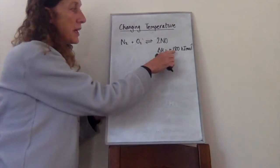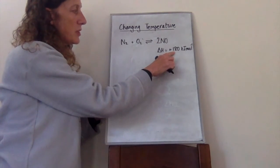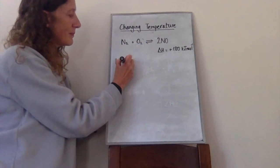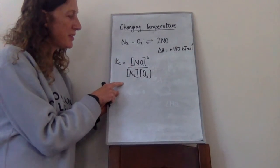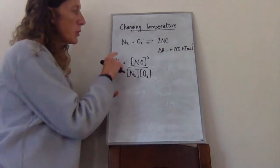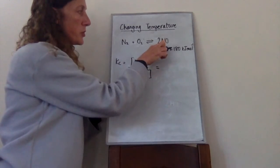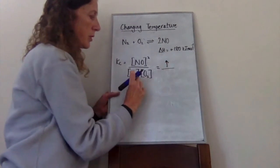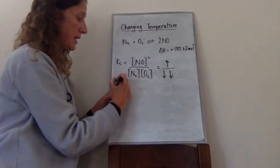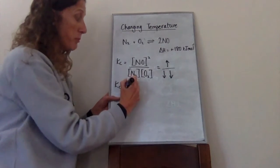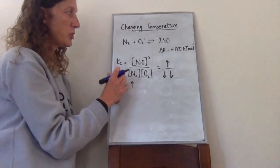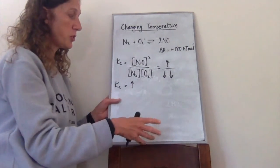For an endothermic reaction — a positive enthalpy change — we again put together the Kc expression. If we increase the temperature, it favours the forward reaction. The concentration of NO goes up, and the concentrations of both reactants go down. Both of these changes make Kc get bigger, and Kc can get bigger when it changes with temperature. So for an endothermic reaction where temperature is increased, Kc increases.